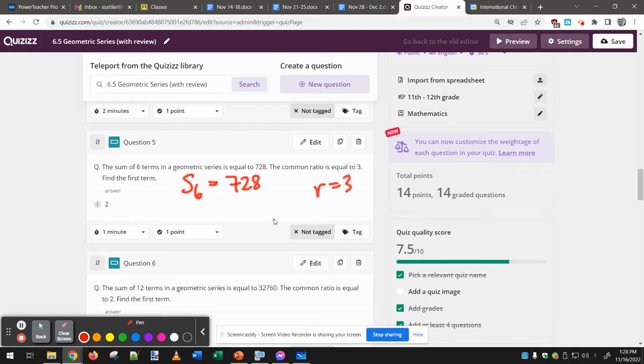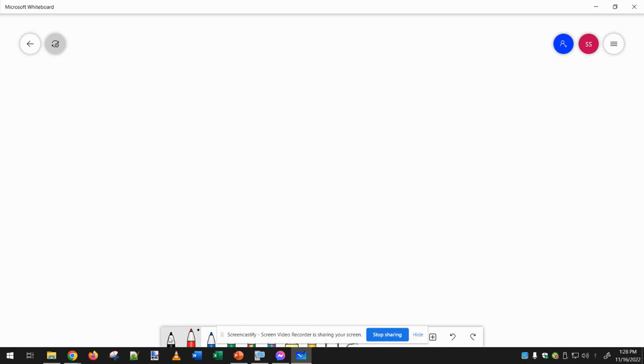So if we use the geometric series formula, where we know, let's switch over here, where we have Sn equals first term times 1 minus R to the N over 1 minus R, we fill in...